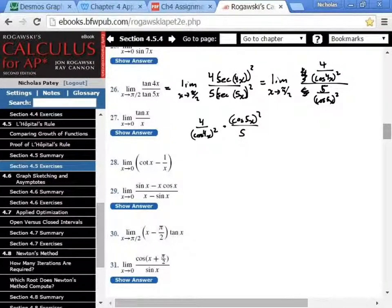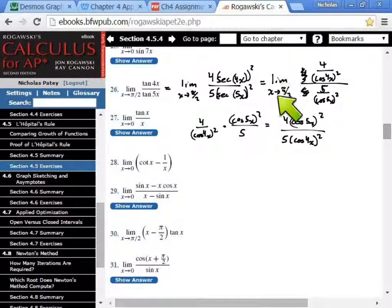So, we have 4 times cosine of 5x squared over 5 times cosine of 4x squared. We get 4 cosine 5x squared on the bottom, we have 5 cosine of 4x squared. So, don't forget what we're doing. We're taking the limit as x approaches pi over 2. So, we plug in pi over 2. You guys ready for this?